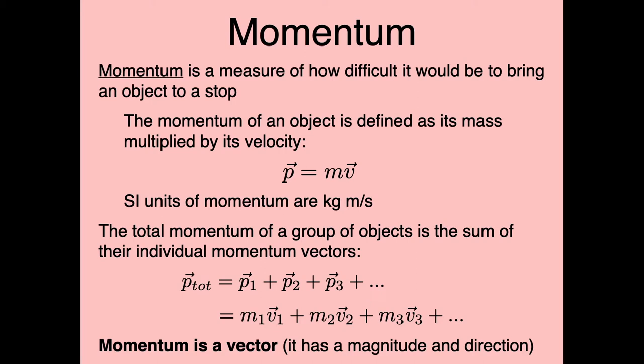The momentum of a single object is just mass times velocity. Oftentimes we have a whole bunch of objects together and want to know the total momentum. You handle this by adding their momentum vectors together: p1 plus p2 plus p3, which equals m1v1 plus m2v2 plus m3v3 and so on. It really bears repeating that momentum is a vector — when we add momentum, we're doing vector addition, not just adding numbers.